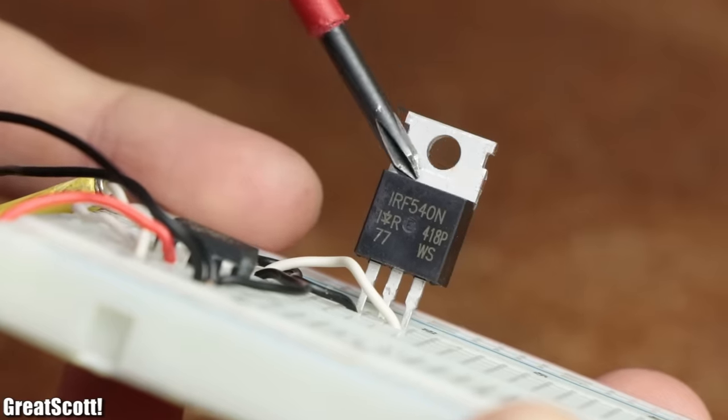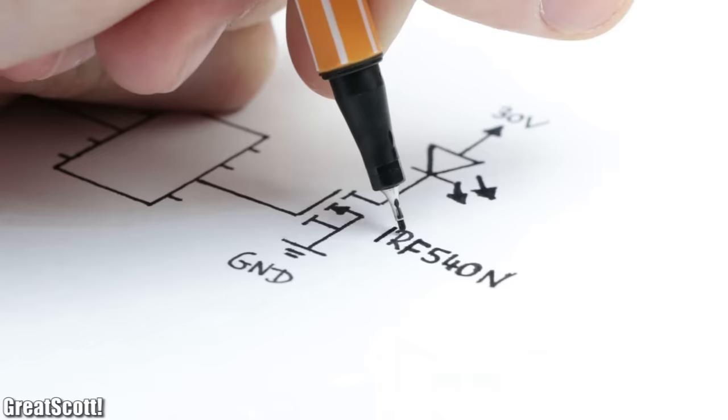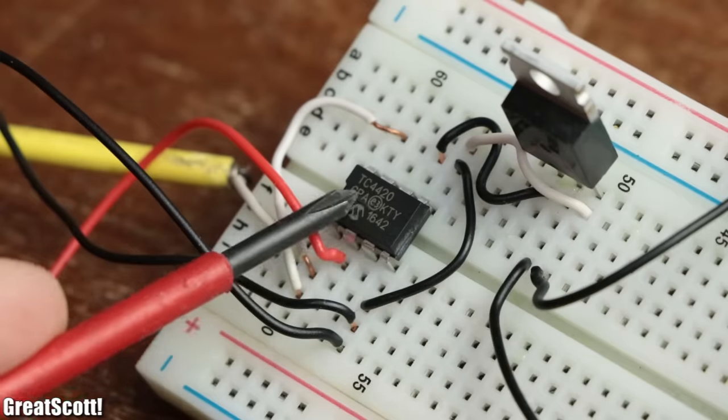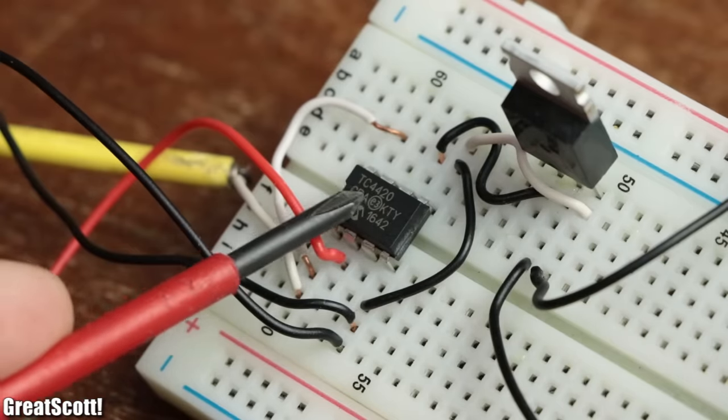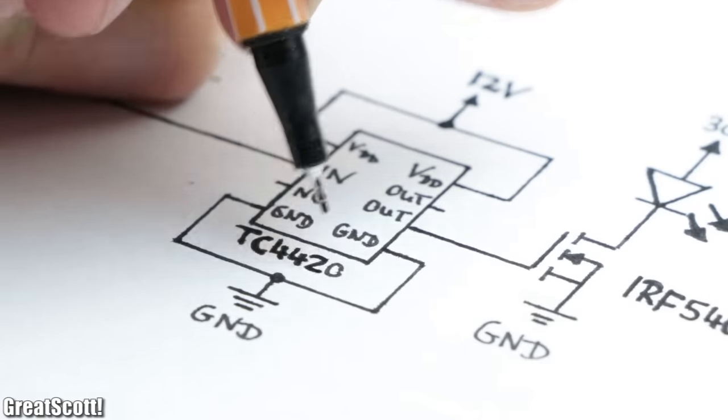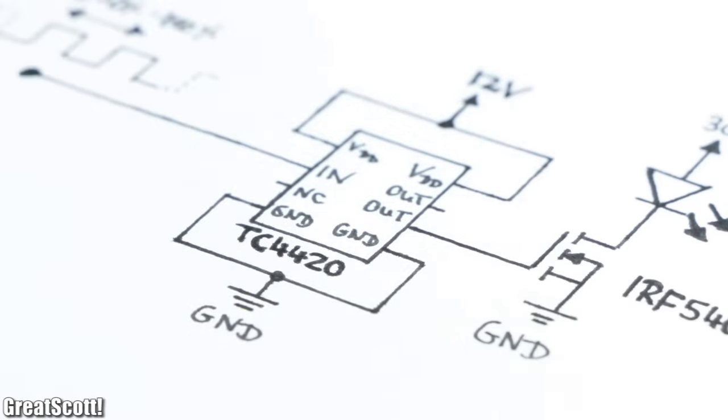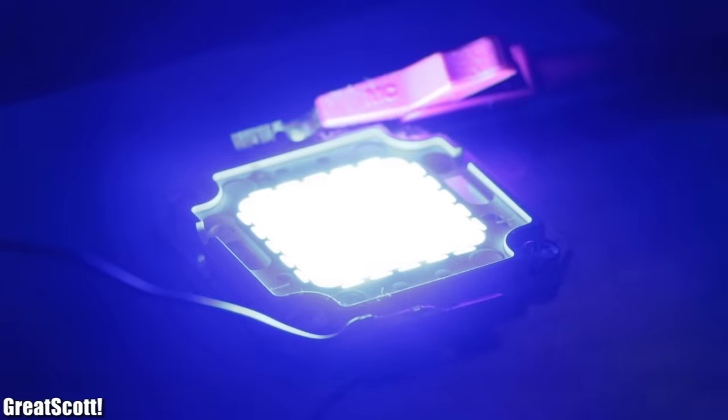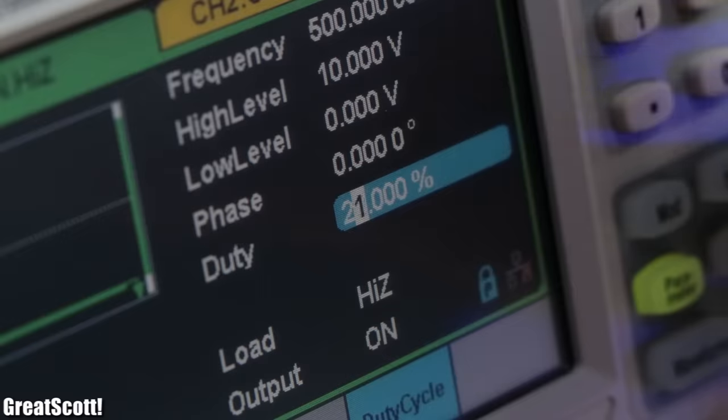An N-channel MOSFET in series to the LED to actually turn it on and off rapidly, and a TC4420 MOSFET driver IC to charge/discharge the power MOSFET's gate as quickly as possible. Now in the low frequency range, this circuit dims the LED perfectly fine by changing the duty cycle of the PWM signal.